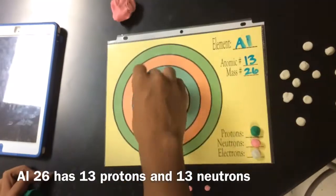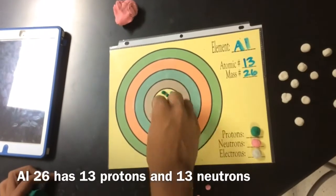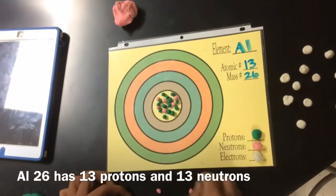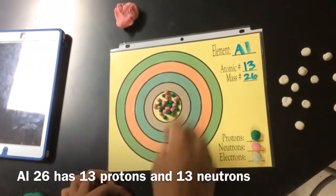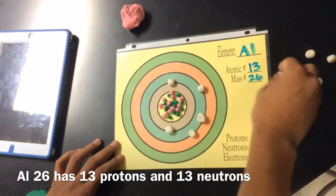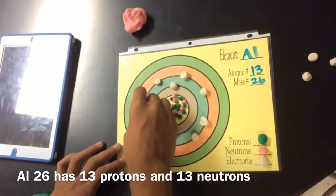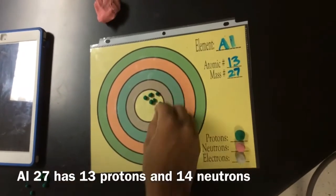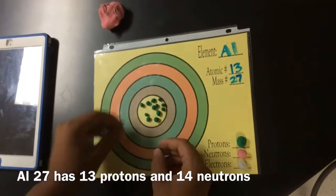The isotope AL-26 has 13 protons and 13 neutrons. AL-27 has 13 protons and 14 neutrons.